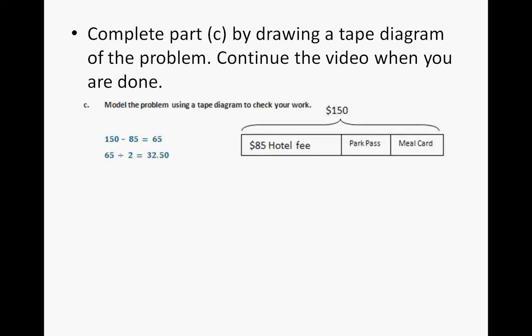So your tape diagram should look something similar to this. You should be showing an $85 hotel fee, and then a spot for the park pass and for the meal card. And the total is $150. Numerically, you can figure this out. 150 minus 85 equals 65, and then 65 divided by 2 is 32 and a half.